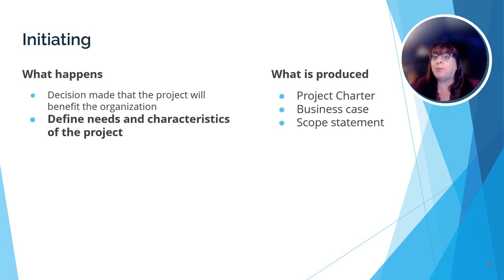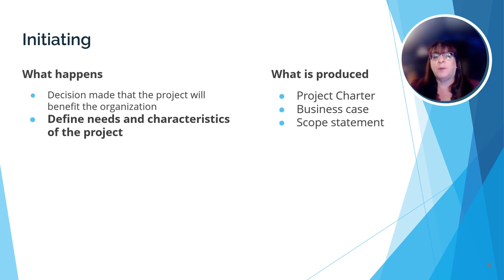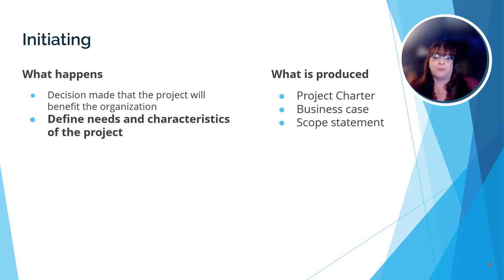The next step is to outline what the project will entail — what are its needs and characteristics. This will generate the project charter, which is a statement of the scope, objectives, and participants in a project. This is the fundamental document for the project and one that is referred to throughout the life of the project. The business case is the justification for the project — it answers the question: why do we need to do this project? The scope statement is probably the most crucial part of the project charter. It is a detailed description of all the elements of a project — basically, what needs to be done and what the deliverables are. Deliverables are the end result of a project.